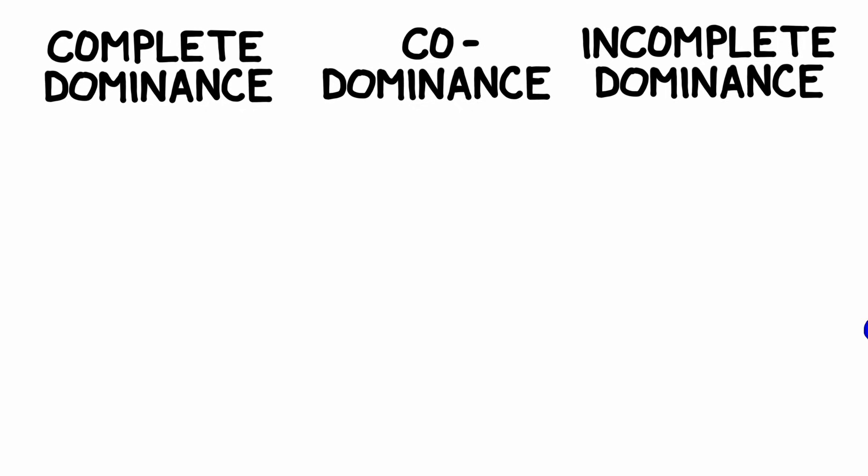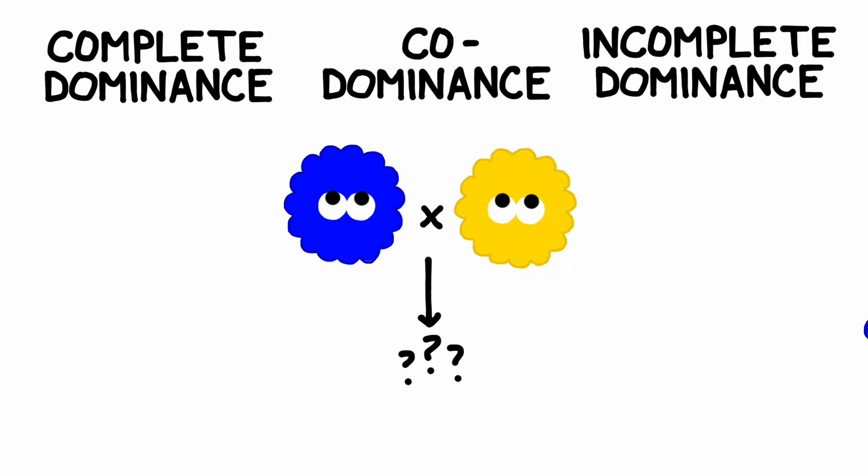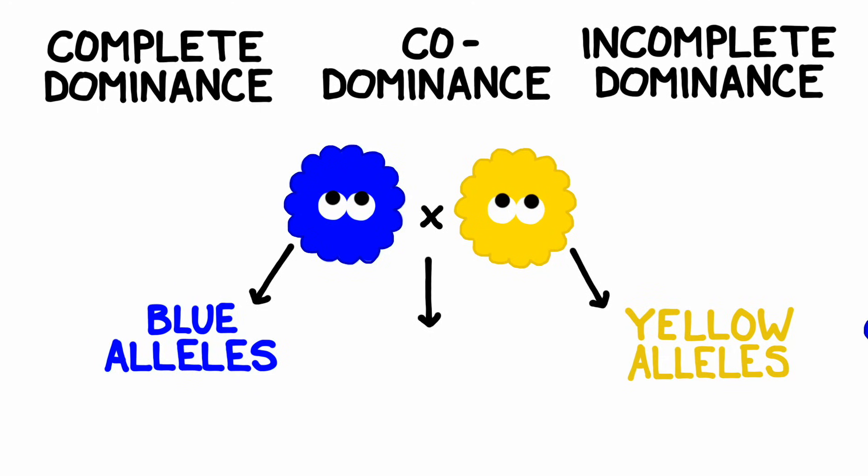It's easiest to compare them if we use coat color as an example. We're going to breed two dots together, a blue dot and a yellow dot, and see what the resulting genotypes and phenotypes for their offspring could be. Assume that the blue parent is contributing only blue alleles, and that the yellow parent is contributing only yellow alleles. We'll be using the letter C for coat color, and the exponent will tell us which variety of color we're talking about.